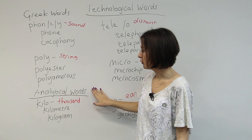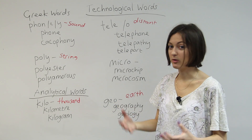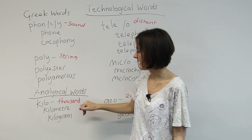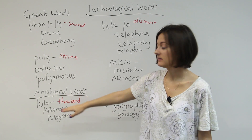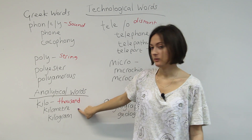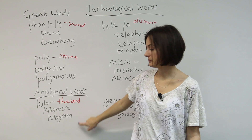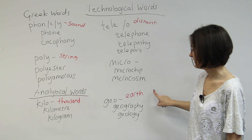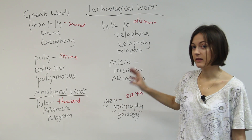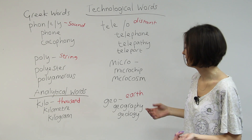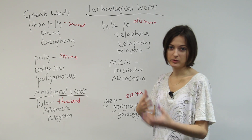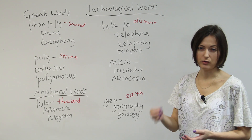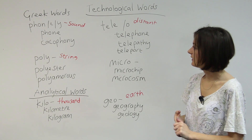We can also thank the Greeks for analytical words — they were measuring things. From the metric system, we have the word 'kilo' and related words, which means a thousand of something. So kilometer is 1,000 meters, and kilogram is 1,000 grams — one for distance, one for measurement. Then you've probably seen 'geo' in some words, and that root means the earth and things related to the planet where we live. So we've got geography, about learning about our world and how it's made up, and geology, which is the study of rocks and stones.